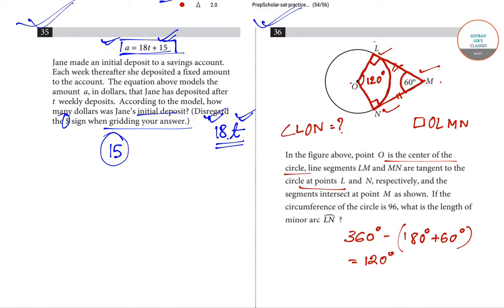At the center, the arc LN makes an angle of 120 degrees. The total circumference of the circle is 96, and this is relevant to 360 degrees of angle. One degree of angle is 96 divided by 360. Hence, 120 degrees of angle represents 96 by 360 into 120. So 96 by 360 into 120 will be the length of the arc.